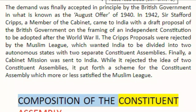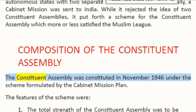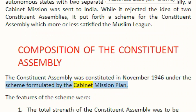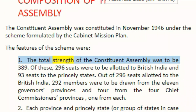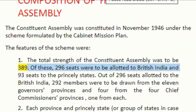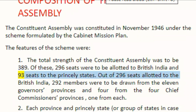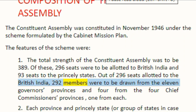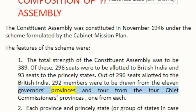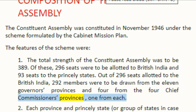Composition of the Constituent Assembly. The constituent assembly was constituted in November 1946 under the scheme formulated by the Cabinet Mission Plan. The features of the scheme were: 1. The total strength of the constituent assembly was to be 389. Of these, 296 seats were to be allotted to British India and 93 seats to the princely states.